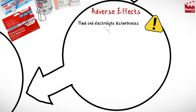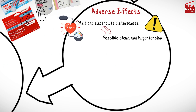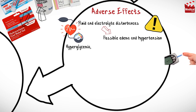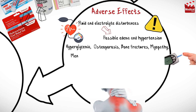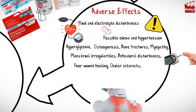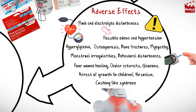Side effects of systemic use of hydrocortisone include fluid and electrolyte disturbances with possible edema and hypertension, hyperglycemia, osteoporosis, bone fractures, myopathy, menstrual irregularities, behavioral disturbances, poor wound healing, ocular cataracts, glaucoma, arrest of growth in children, hirsutism, and Cushing-like syndrome.